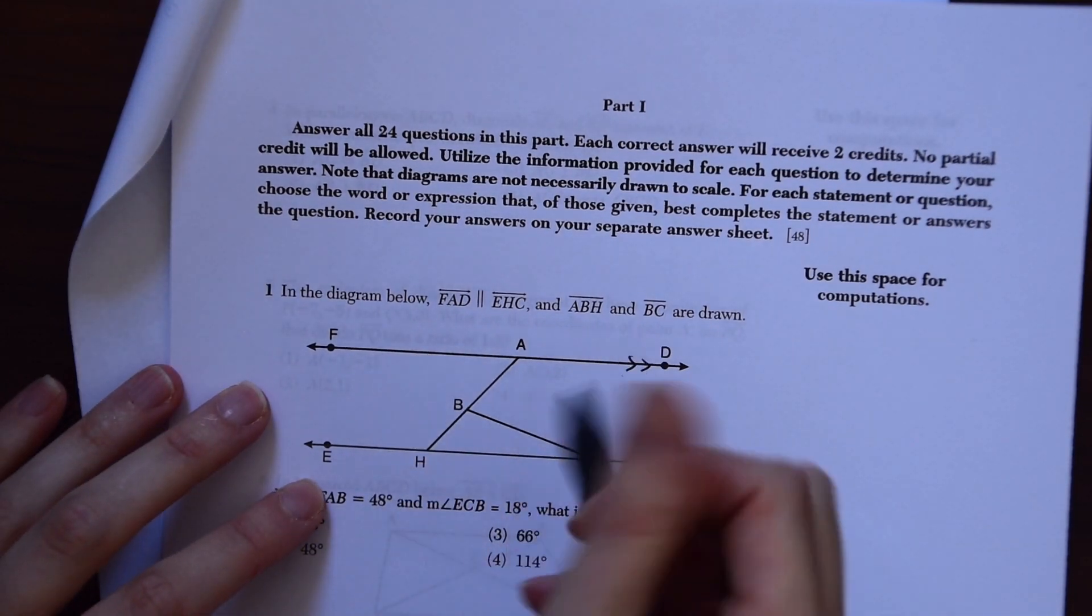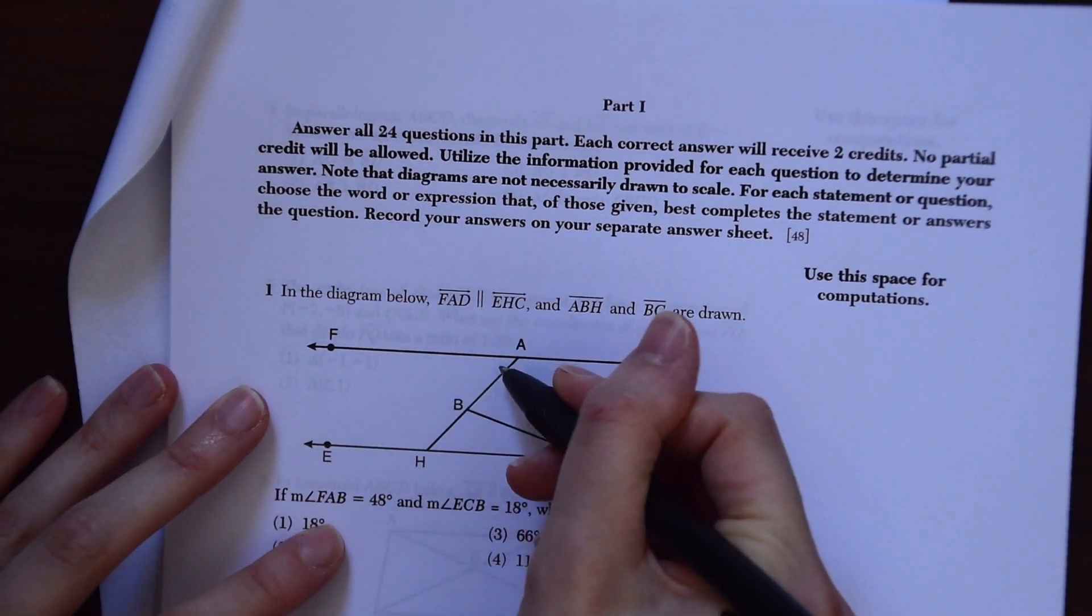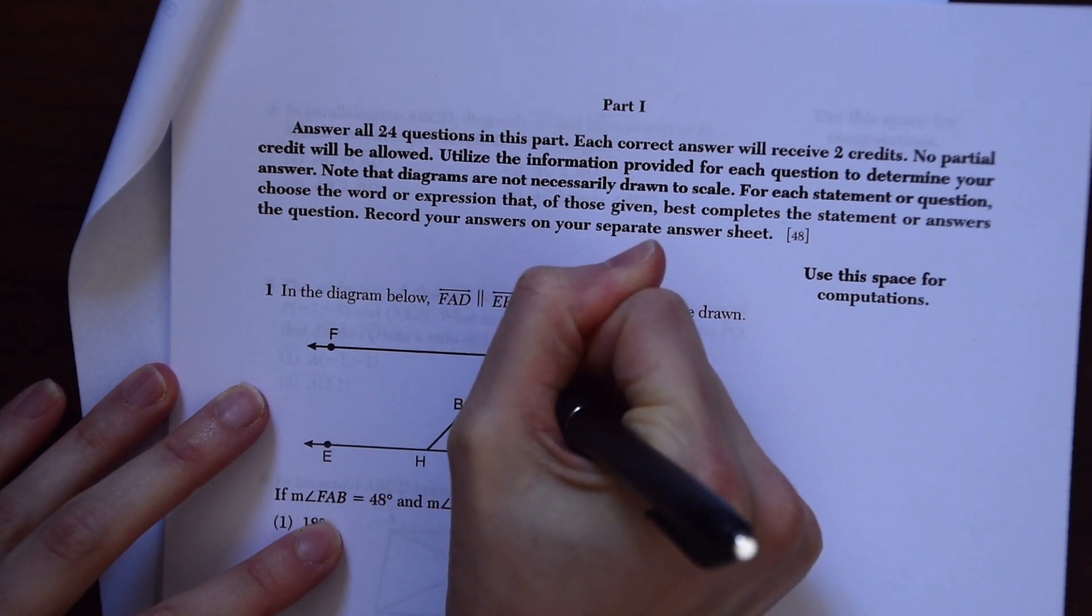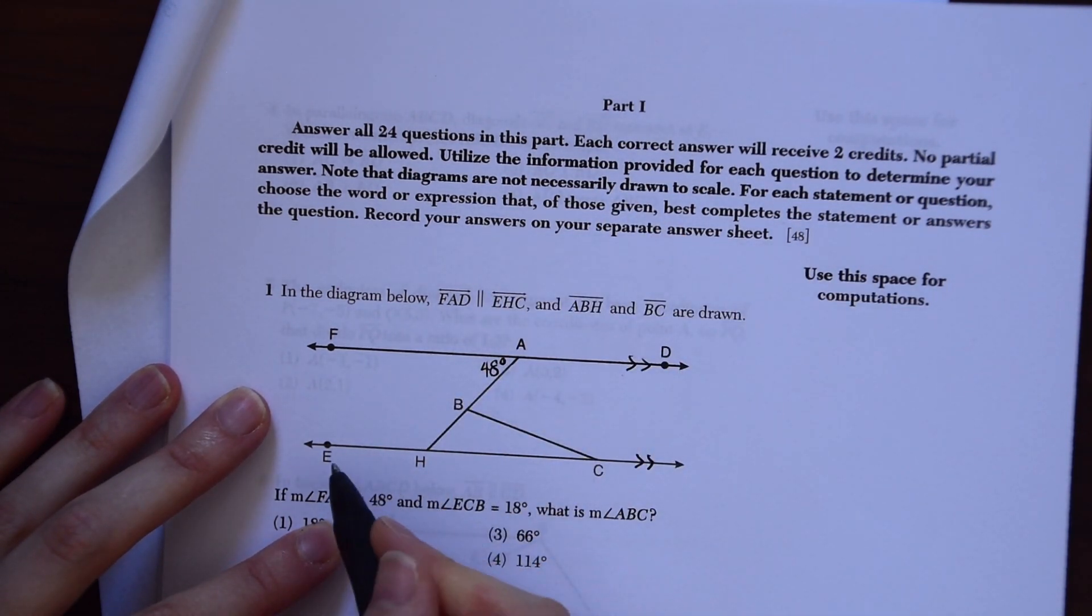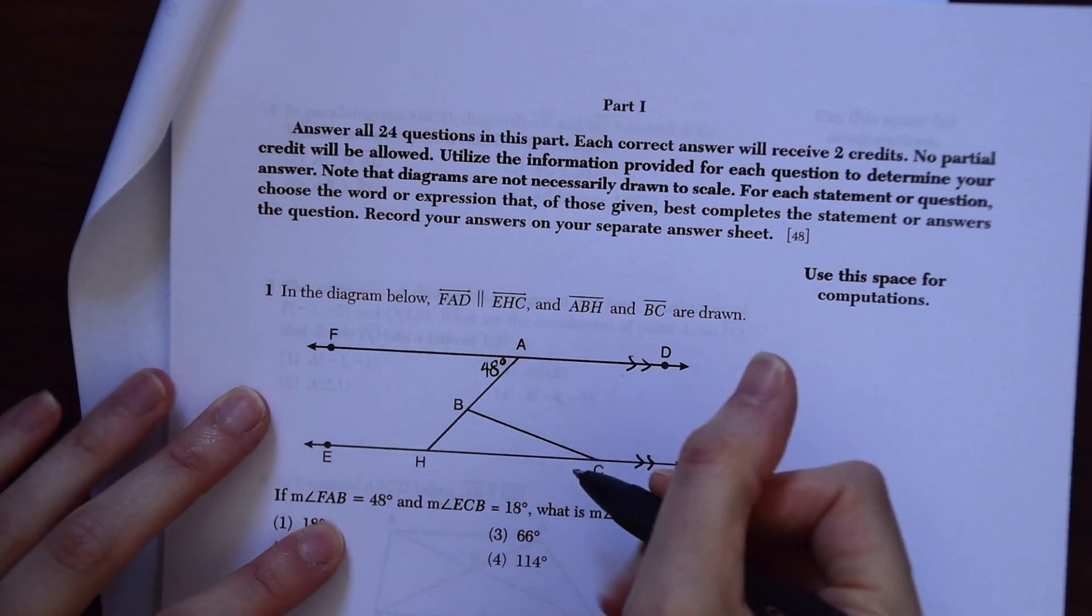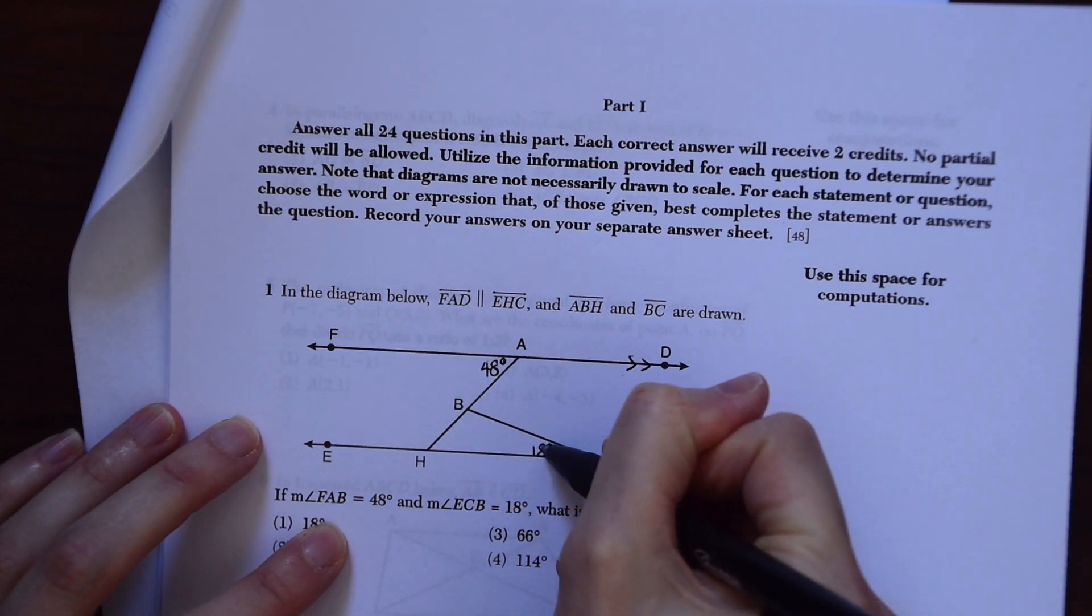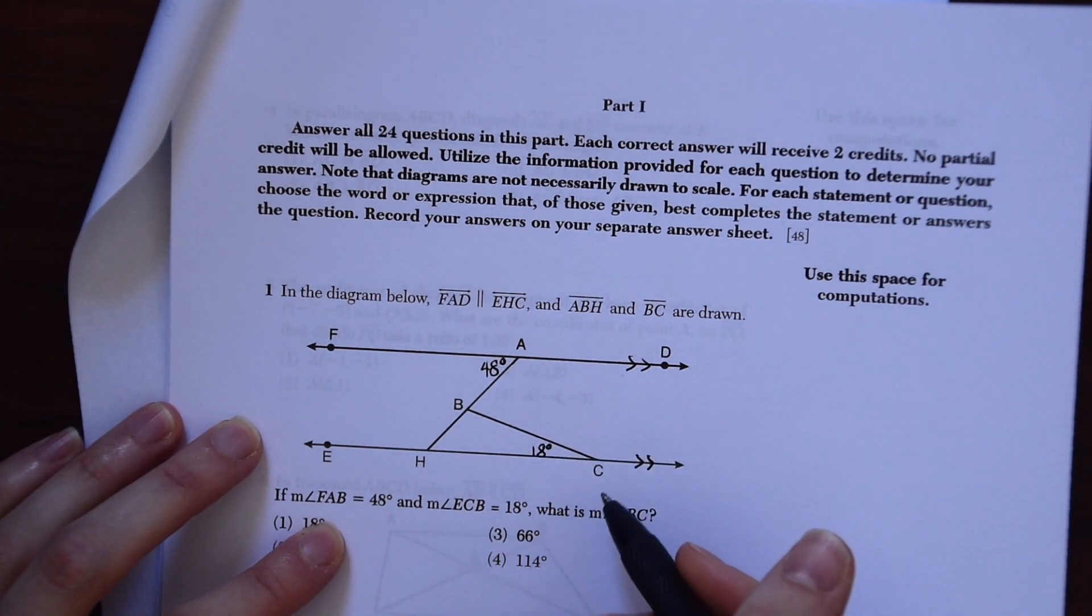Angle FAB, so right here, is 48 degrees. And angle ECB, so right here, is 18 degrees. What is angle ABC?